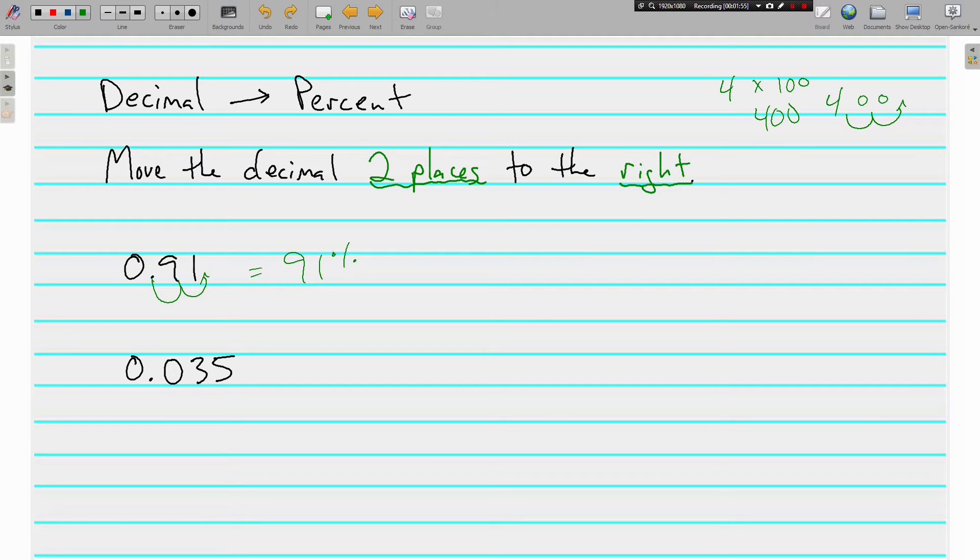Same thing here, 0.035 to make it a percent. We multiply by 100. That moves the decimal point two places to the right, and we have 3.5%, 3.5%.